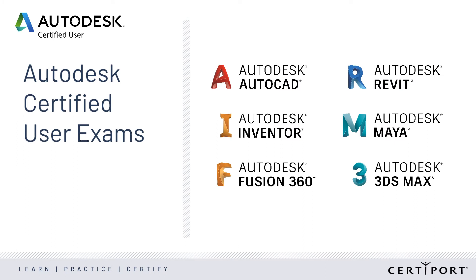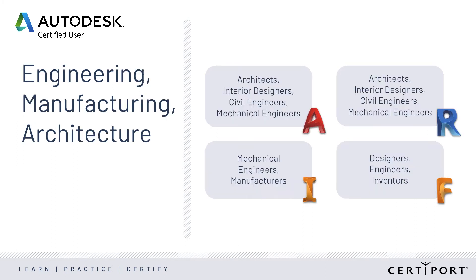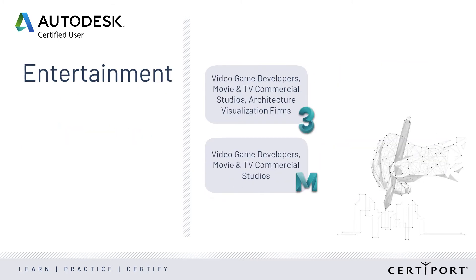Here's a quick view of all of the ACU titles we offer right now. These are the four titles related to engineering, manufacturing, and architecture — Autodesk calls this category design and make. These two titles are related to entertainment.